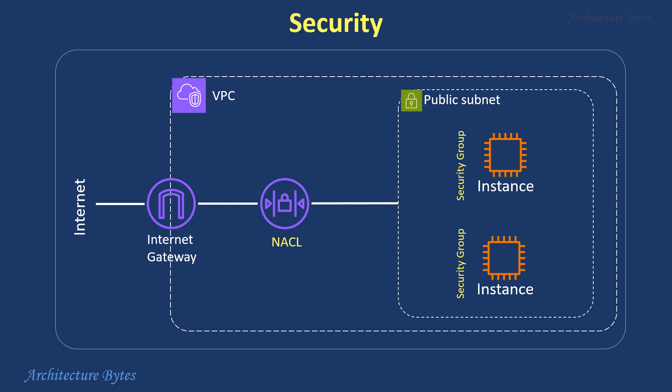Security groups act as a virtual firewall that controls inbound and outbound traffic for Amazon EC2 instances. They are associated with instances and contain rules that allow or restrict traffic based on protocols, ports and source IP ranges.